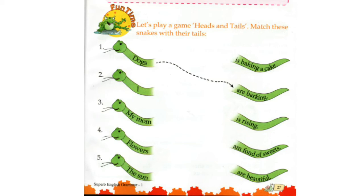Number two: I. We always use I with Am. So let's find where Am is. Number four — I am fond of sweets.